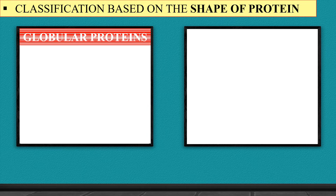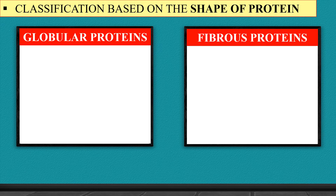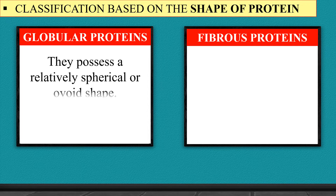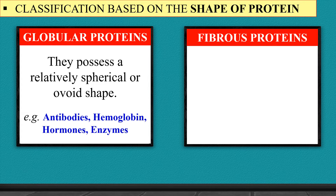The second category of classification is on the basis of shape. On the basis of shape, proteins can either be globular proteins or fibrous proteins. Globular proteins generally have a spherical or ellipsoid shape. These proteins are soluble in water or aqueous media containing acids, bases, salts, or alcohol. The tertiary and quaternary structures are usually associated with globular proteins. Examples of globular proteins include antibodies, hemoglobin, hormones, and enzymes.